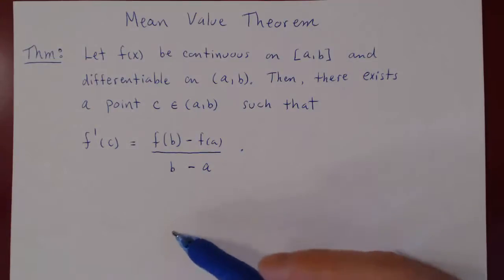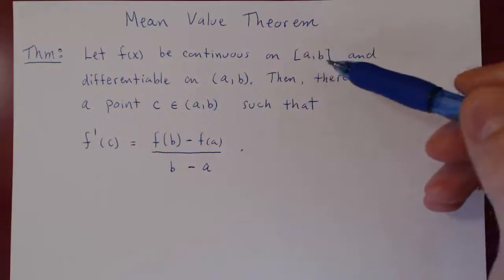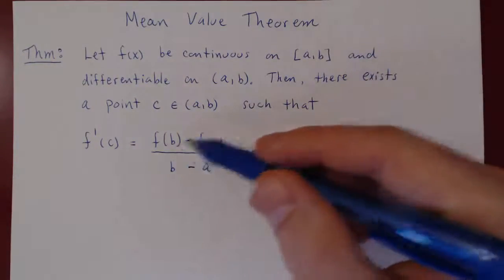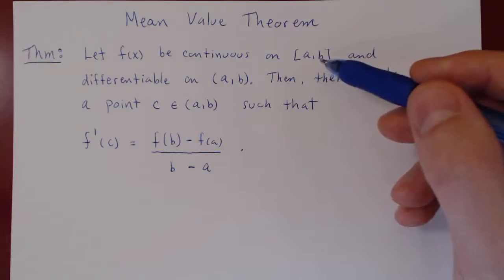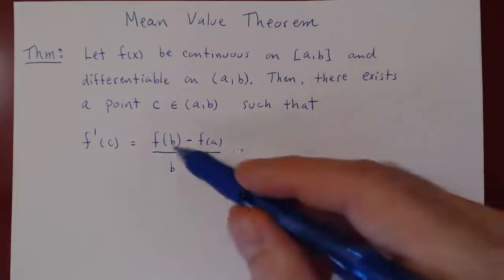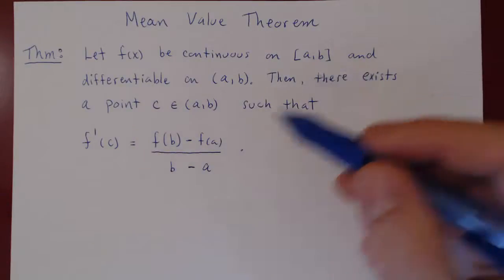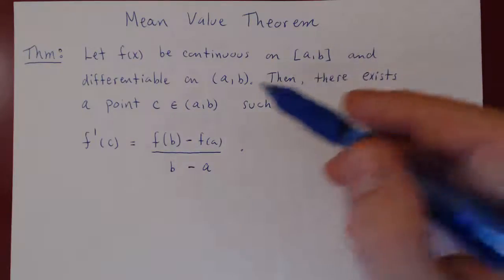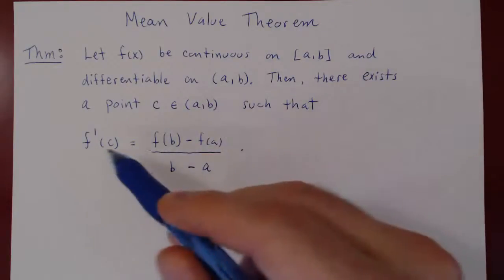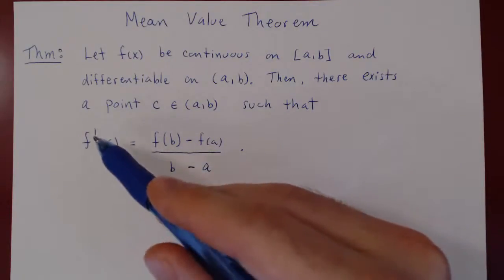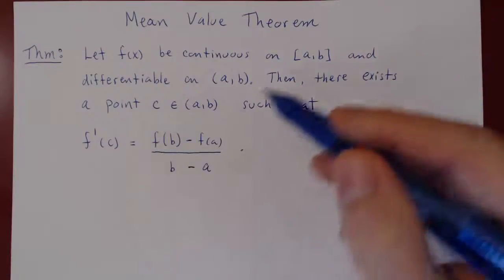If you think of what this means geometrically, f(b) minus f(a) is the total change in y of the function over the interval [a, b] — f(b) is the final value, f(a) is the initial value. So that's the total change in y over the total change in x, b minus a. This is the average slope of the function — total change in y over total change in x. The Mean Value Theorem says there must be at least one point between a and b where the derivative equals the average slope.